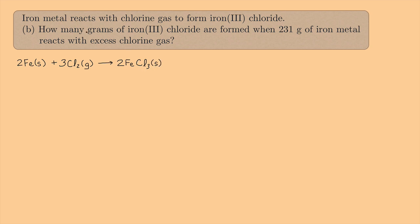And we have 231 grams of iron metal. So we have 231 grams of iron metal. And we want to know, we want to figure out how many grams of iron(III) chloride are we going to have. So that's the basic pattern here. And we have excess chlorine gas, so this is not a limiting reactant problem.